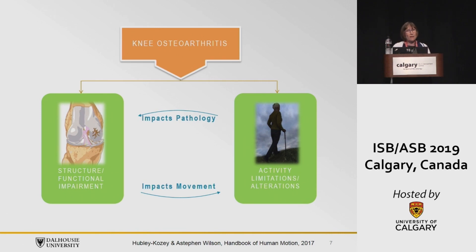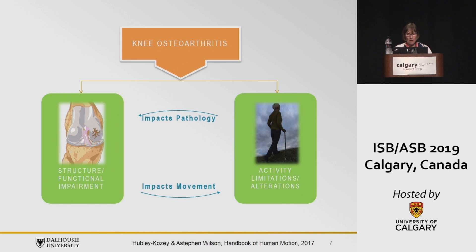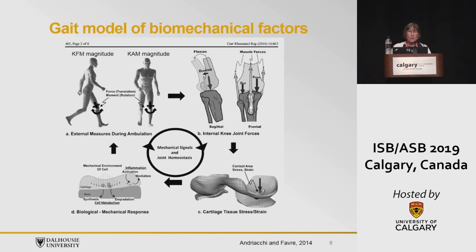The work we've done took the International Classification of Function from the World Health Organization and said that structural and functional changes in the joint impact how we move, but also how we move has an impact back onto the joint structures and functions. The early pioneering work was done by Andriacchi and Spurs using gait as a model for studying biomechanical factors in OA, and it started with looking at external knee moments — in particular the knee flexion moment and the knee adduction moment, with less emphasis around the knee rotation moment.